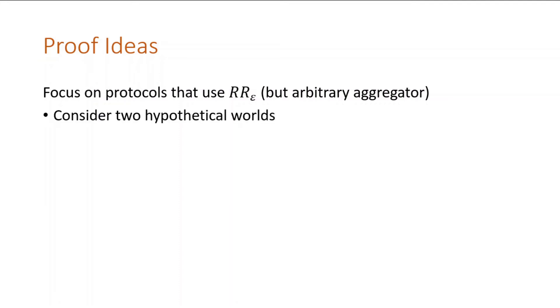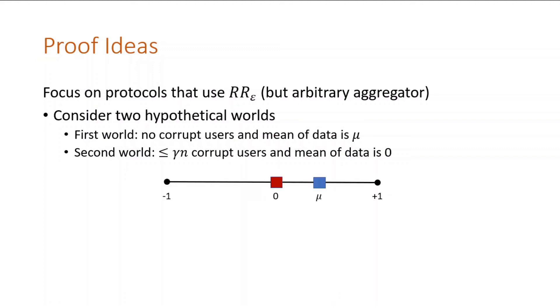We will construct two worlds. In one world, there are no corrupt users, and the mean of data is some mu. In the other world, a gamma fraction are corrupt, and the mean of user data is zero. Because data is binary, we will visualize our distributions as points on a number line.